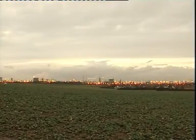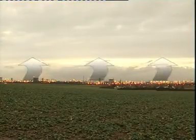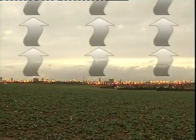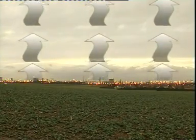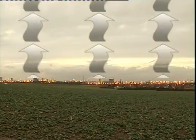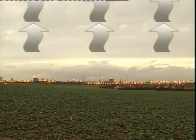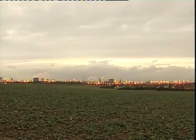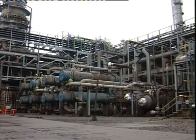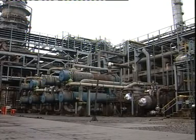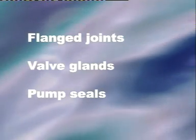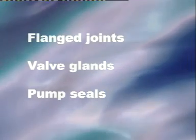Most chemical plants have many thousands of possible emission sources, and care is necessary to ensure that emissions monitoring and repair activity is focused carefully at the areas where most cost-effective benefit can be obtained. In chemical plants, the three main components that influence overall plant fugitive emissions are normally flanged joints, valve glands, and pump seals.